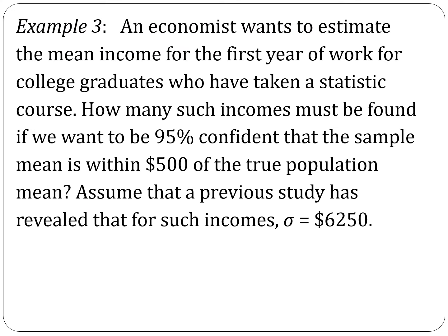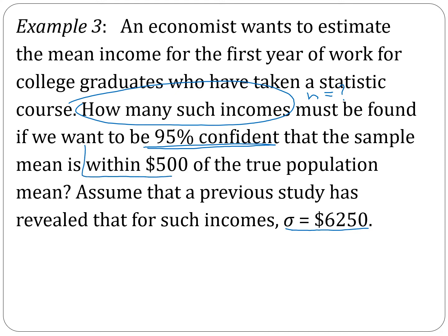For example: an economist wants to estimate the mean income for the first year of work for college graduates who have taken a statistics course. How many such incomes must be found if we want to be 95% confident that the sample mean is within $500? It tells us that sigma equals 62.50. The key question — how many such incomes — is asking for the sample size. Within $500 is the margin of error. We want our true population mean within that range. For 95% confidence, the Z-score is 1.96.